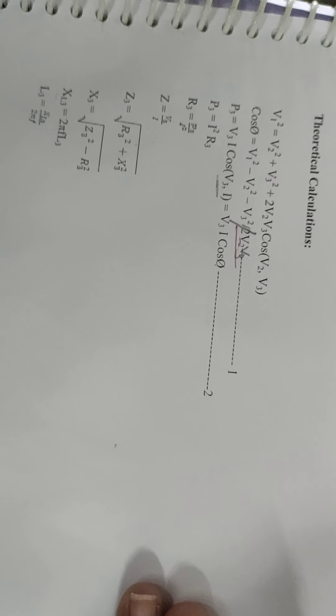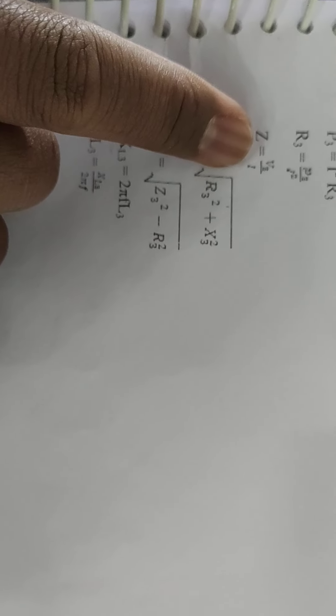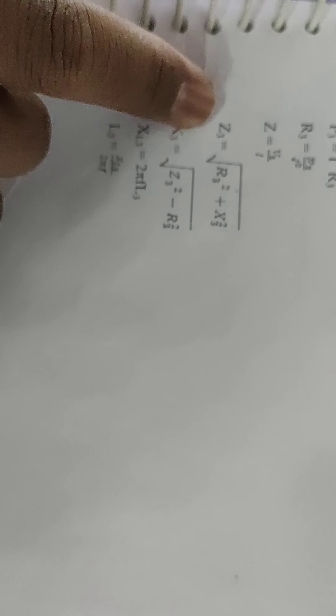P3 can also be expressed as I²·R3, so R3 = P3 / I². Using the relationship V = I·Z, we get Z = V / I. The impedance Z3 = √(R² + X²), and from that X = √(Z² − R²). Once you know the reactance XL, you can find L using XL = 2πFL, so L = X / (2πF). The standard frequency is 50 Hz.